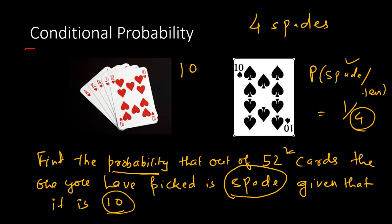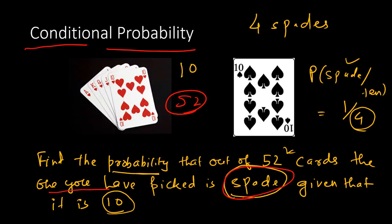Let's try to understand what is conditional probability by taking an example. In the game of cards, which has 52 cards, find the probability that the card you picked is a spade, given that you have already picked the number 10. There are four cards carrying number 10 in a pack of 52 cards, and out of these four cards, the probability that one of them is a spade is clearly 1 by 4.